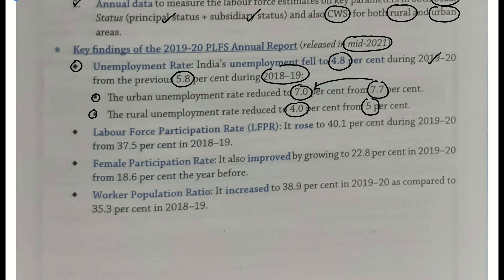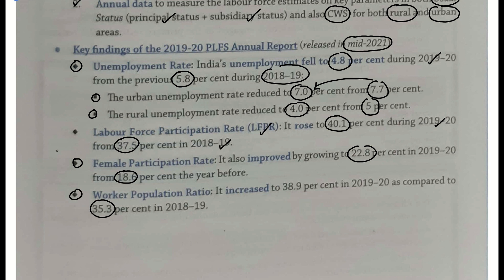Labor force participation rate yeh badh gaya — isका badhna achhi baat hai. 37.5% hua karta tha 2018-19 mein, lagbhag 3-5% badh gaya, 40% ho gaya 2019-20 mein. Female participation rate — it also improved: pehle tha 18% in 2018-19, aur 2019-20 mein 22.8% ho gaya. Worker population ratio — yeh bhi increase ho gaya: pehle yeh tha 35% in 2018-19, aur yeh 39% (38.9) ho gaya.